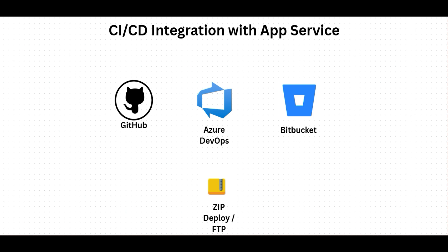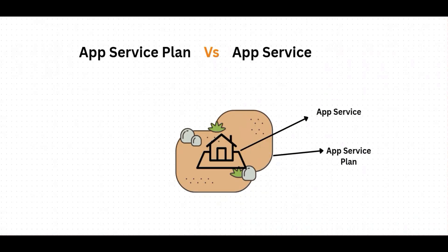Azure App Service also supports powerful CI/CD integrations out of the box. You can automatically deploy your apps using GitHub, Azure DevOps, Bitbucket, FTP, or even manual zip deployment. This makes continuous delivery and version control very easy to integrate into your deployment workflow.